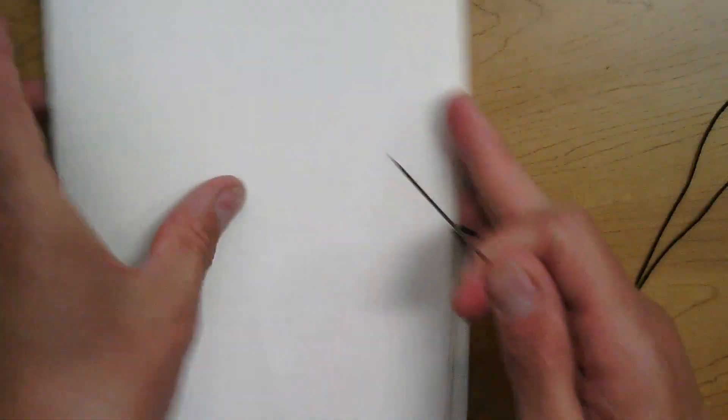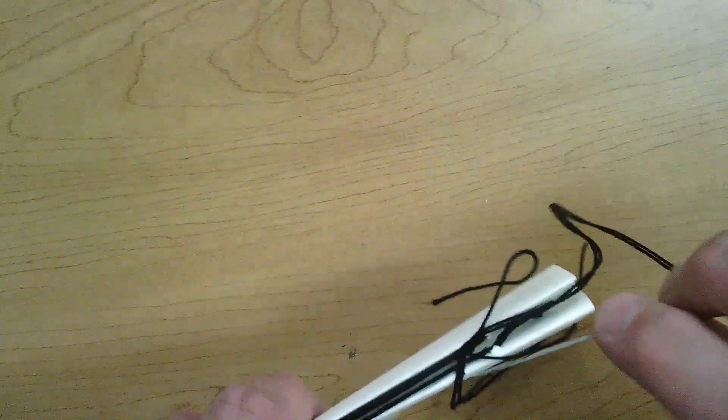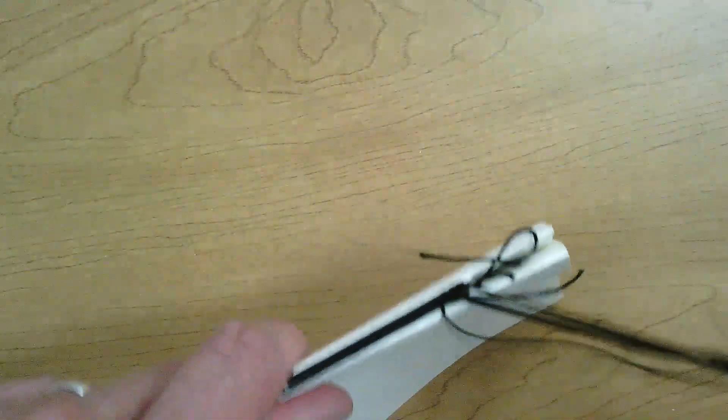All we're going to do to bind these together is simply go through our knots. Yes, mine's a bit of a mess there, but it'll be okay. And cinch them up.